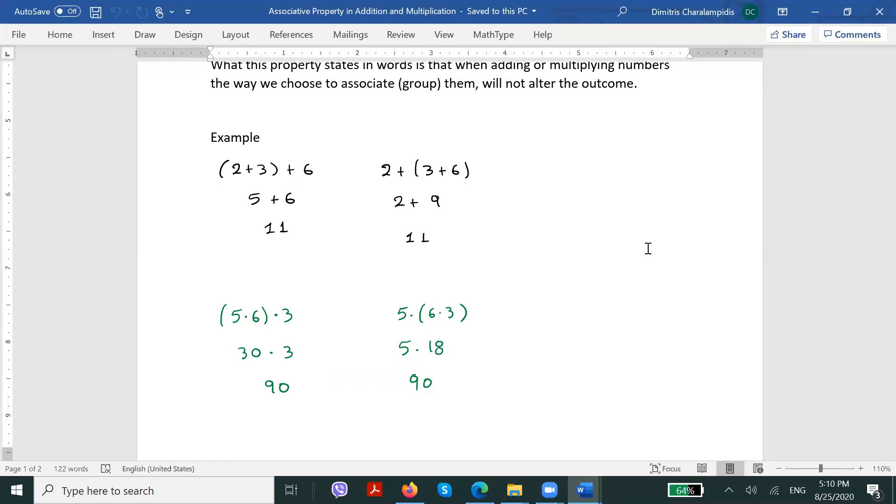Similarly, while multiplying, if I need to multiply 5 by 6 by 3, I can either group 5 and 6 together and then multiply that product by 3, or I could group 6 and 3 together and then multiply that product by 5. In both cases, I can clearly see that I would get the same result.